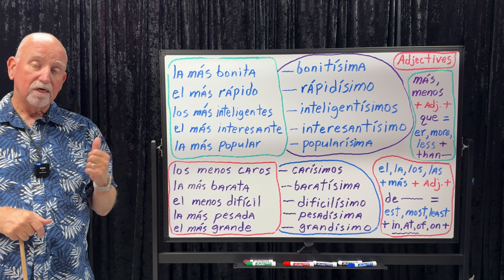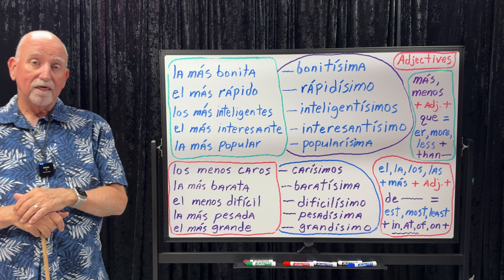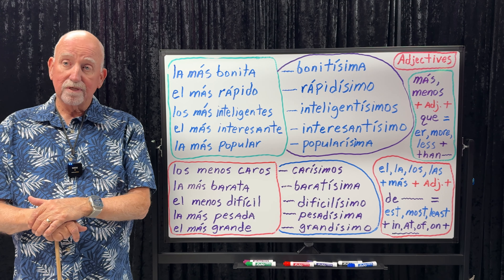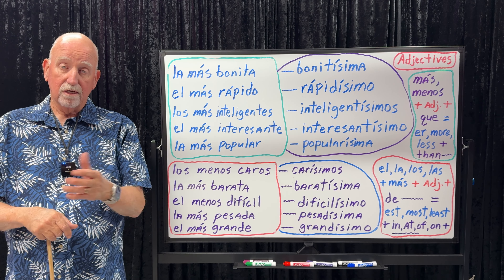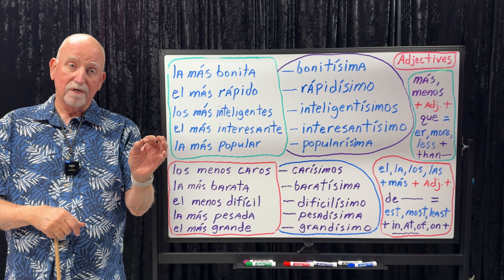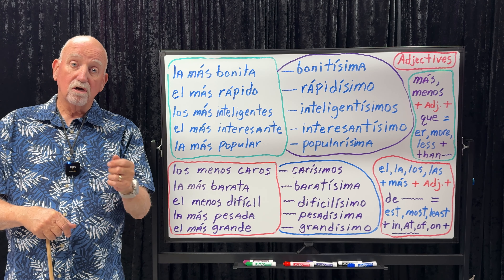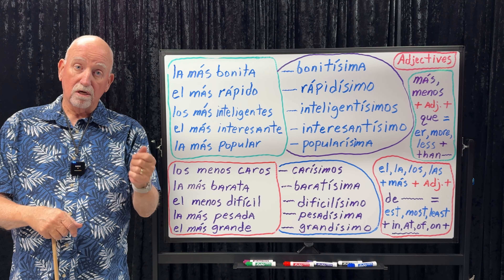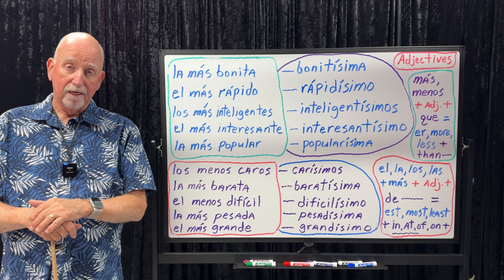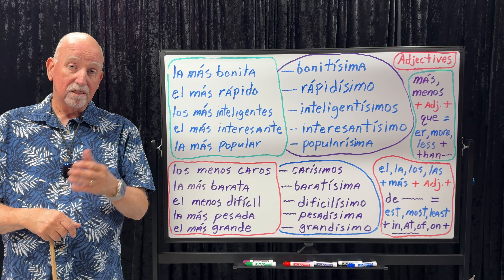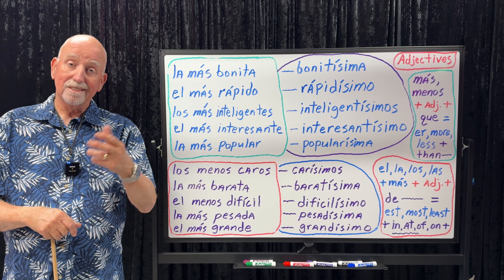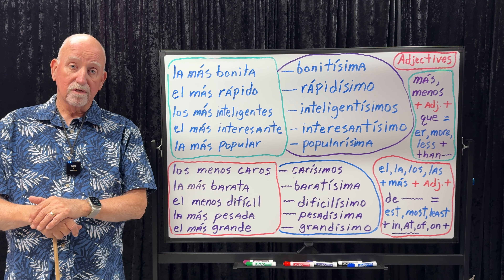We were talking about degree of adjectives. We know that if you just want to say somebody's tall — es alto — that's what they call the positive degree. Then we have the comparative, like taller, somebody's taller than somebody else. And then when we do -EST in English, like tallest or most intelligent, that's called the superlative.